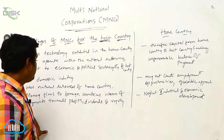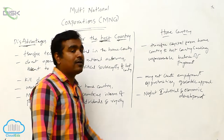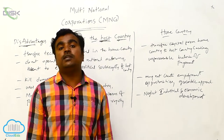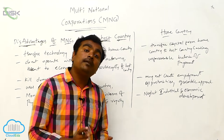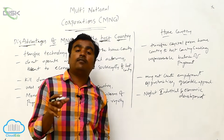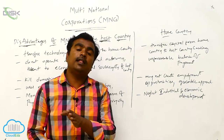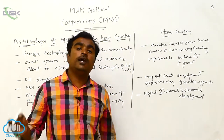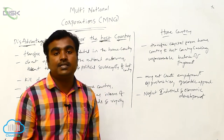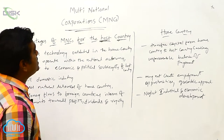Money flows out of the host country to foreign countries in terms of payments toward profits, dividends, and royalties. MNCs take all the profits and dividends they have earned from the host country back to their home country. So there is a significant money flow from the host country to the foreign country.